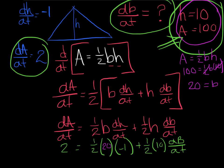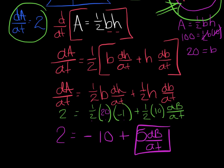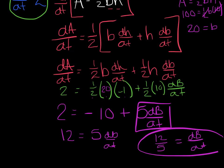Now I can take that B value and substitute it in. Continuing to solve: 2 = ½(20)(−1) + ½(10)(dB/dt), which gives 2 = −10 + 5 · dB/dt. Adding 10 over: 12 = 5 · dB/dt. Dividing by 5: dB/dt = 12/5. And note the units — we have a rate, so centimeters per minute.